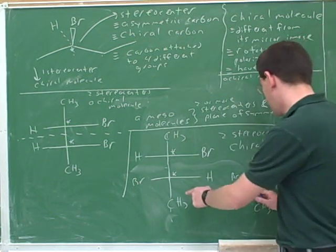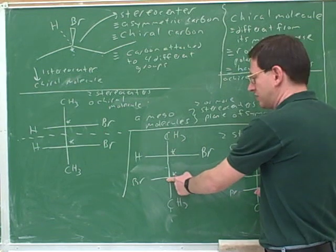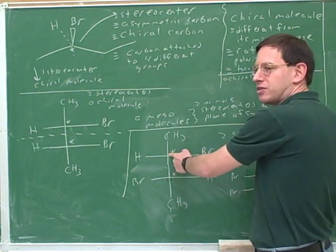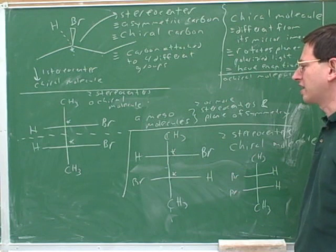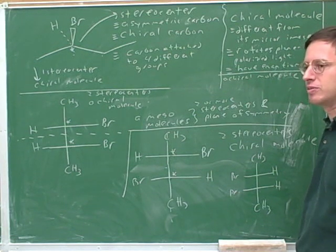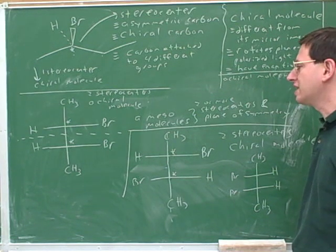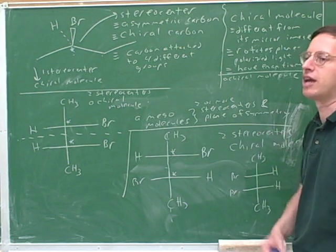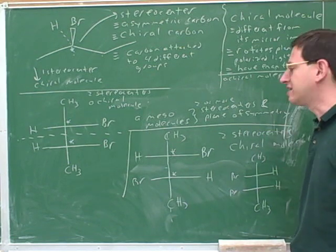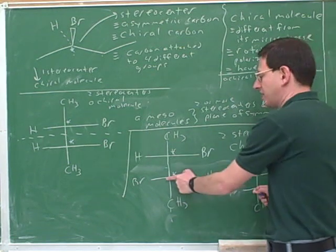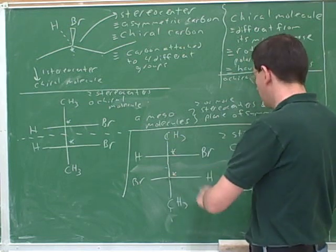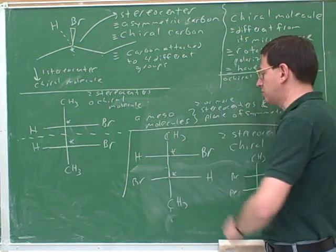Ah, okay. Diastereomers have the same configuration at some stereocenters and opposite configuration at other stereocenters. Okay. So it's good to recognize how to quickly test whether things are enantiomers or diastereomers. Enantiomers have opposite configuration at all stereocenters. Okay. And diastereomers have the same configuration at some stereocenters, one or more, and opposite configuration at some stereocenters.